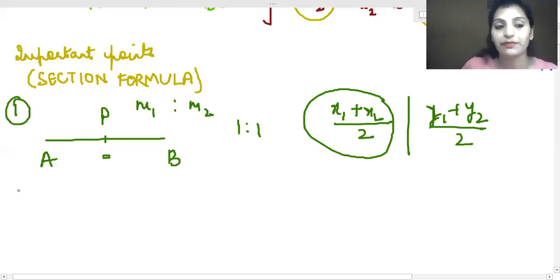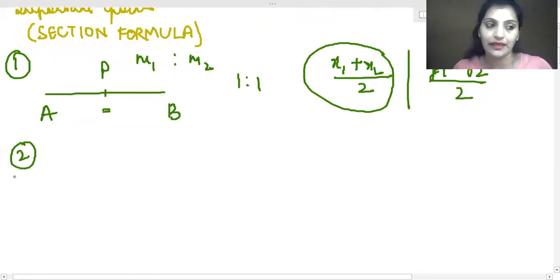Now, suppose that there is no ratio given. We need to find out the ratio. So what we do? We always take the ratio as k is to 1. We take it as k is to 1. Then what happens to us is that we only have one variable.